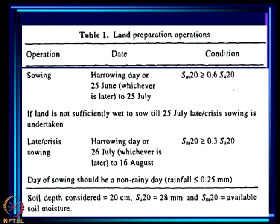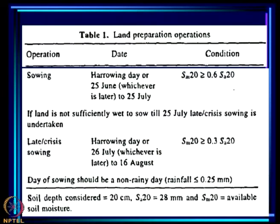Sowing can be done on the day of harrowing or 25th June, whichever is later, until 25th July. The condition for sowing is that soil moisture must be greater than 60% of the maximum available. If the land is not sufficiently wet to sow till 25th July, late or crisis sowing is undertaken from harrowing day, from 26th July to 16th August. Additionally, the day of sowing must be a non-rainy day, using the IMD definition of rainfall less than 0.25 mm.